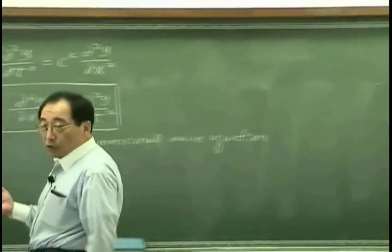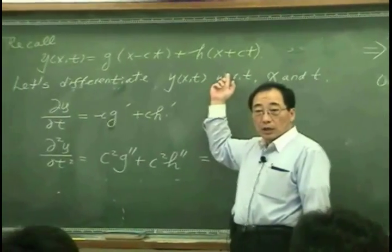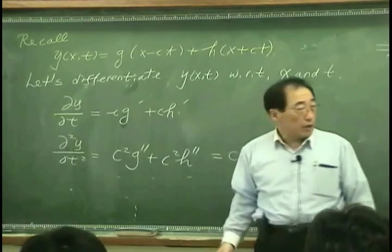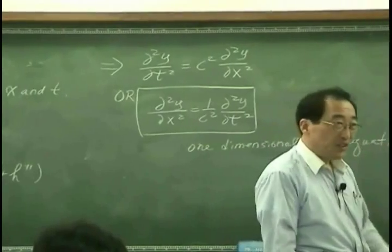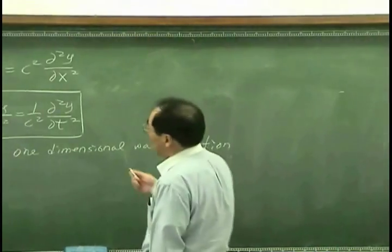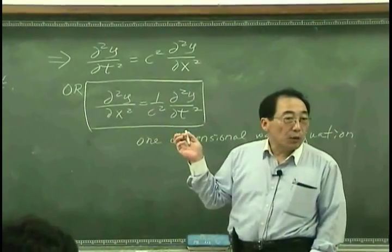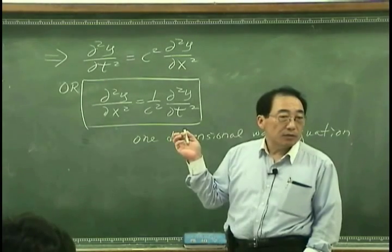And then we back to the general expression, one dimensional expression. And then using mathematics, we end up with one dimensional wave equation. What does it mean? The first meaning is any one dimensional wave has to satisfy this wave equation.